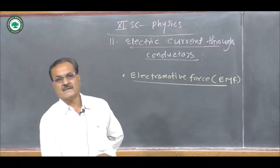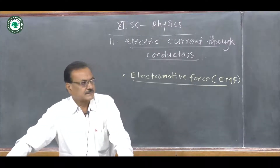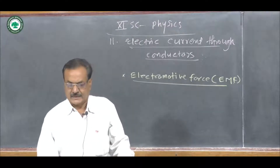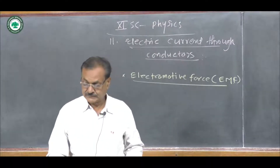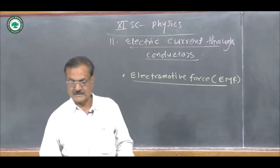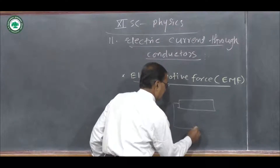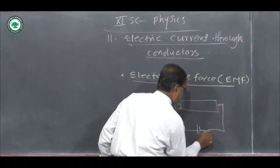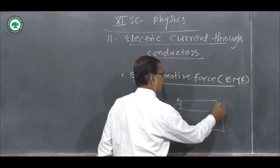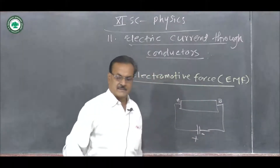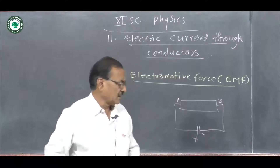We use an electrical cell as a source of electric energy. When a conductor is connected across a cell, electrons flow from the negative terminal of the cell to the positive terminal through the conductor. Positive terminal is connected to point A, negative terminal is connected to point B, and the electrons flow from the negative terminal to the positive terminal through the conductor.